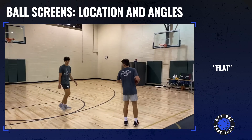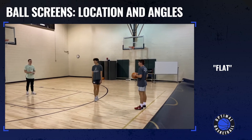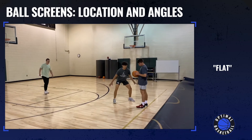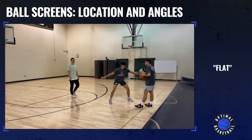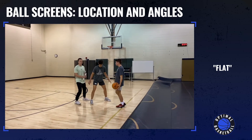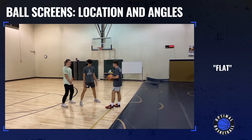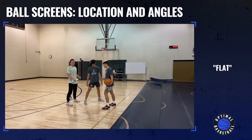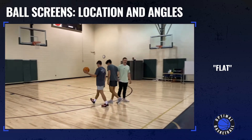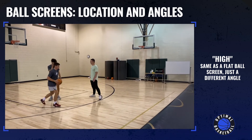Now let's go to the top of the key. A flat pick and roll is where the screener sets the screen above the three-point line and is completely flat — not at an angle either way — just flat, and lets the ball handler make moves to get by the defender. That's a flat pick and roll.